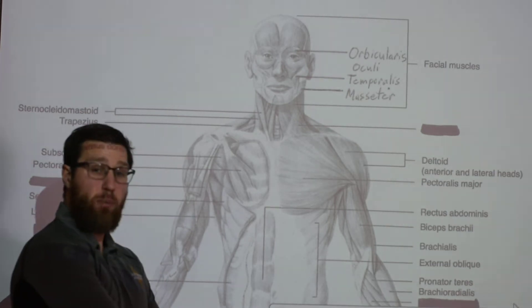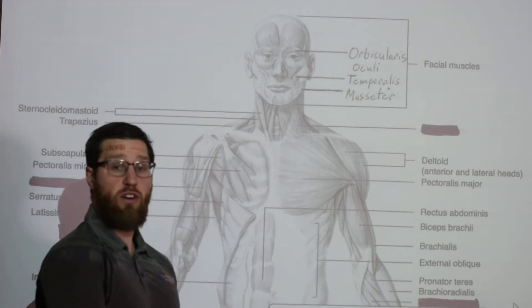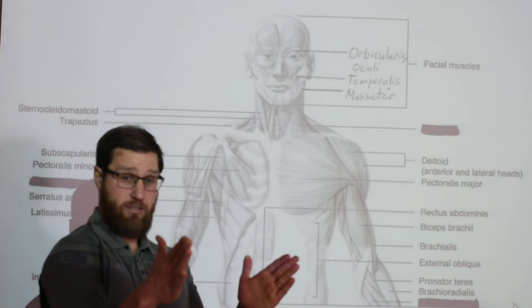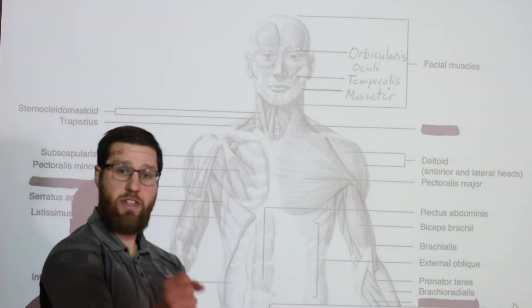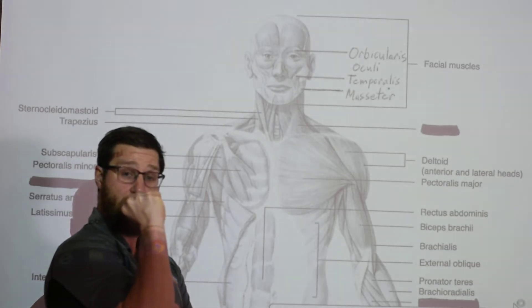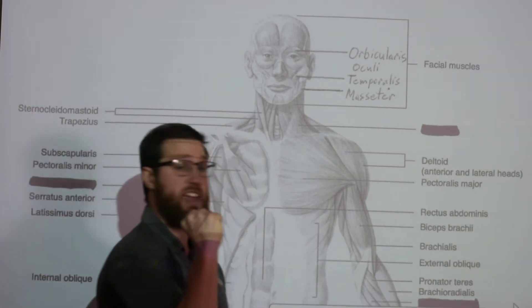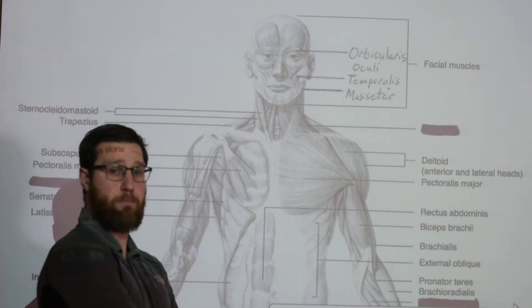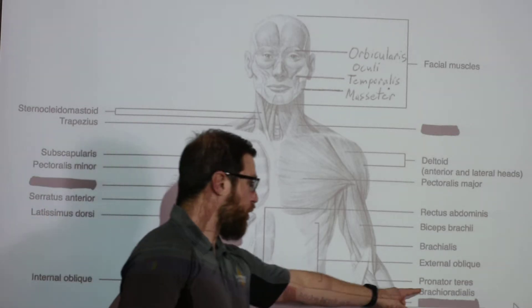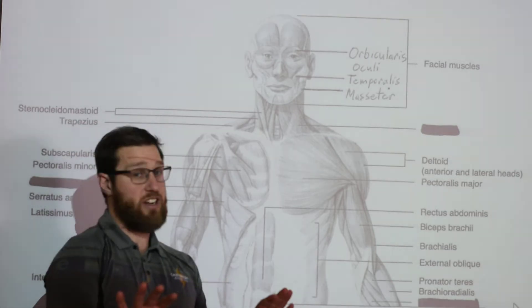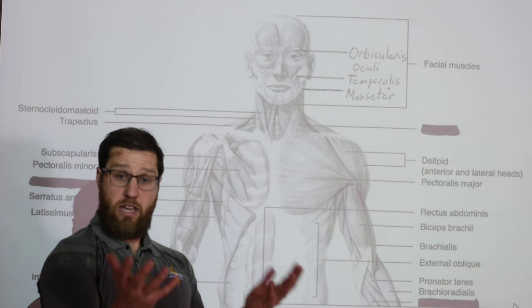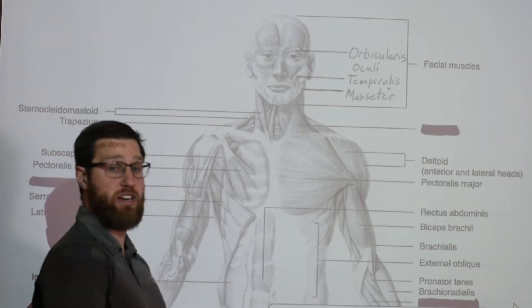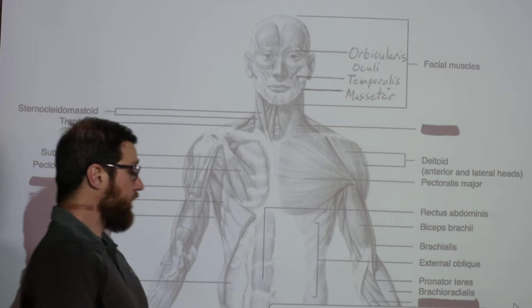Your brachioradialis is located more in your forearm but is also involved in elbow flexion — specifically flexion at a partial pronation. Think of holding a hammer and flexing at the elbow; that partial pronation makes the brachioradialis the prime mover, sometimes called the 'hammer motion.' Your pronator teres is also there and, just like it sounds, is your major pronator muscle — its primary movement is simply pronation.